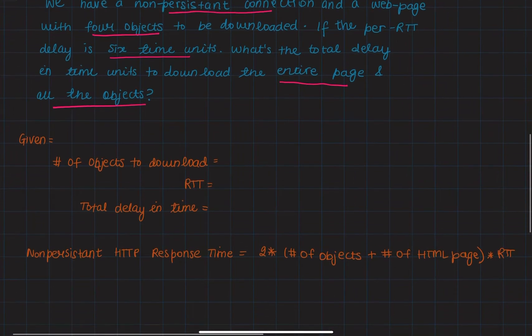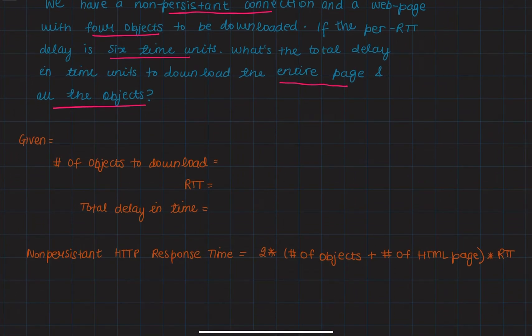So after reading the problem we know that the number of objects to be downloaded is four, our RTT is six, and we're being asked what is the total delay in time?